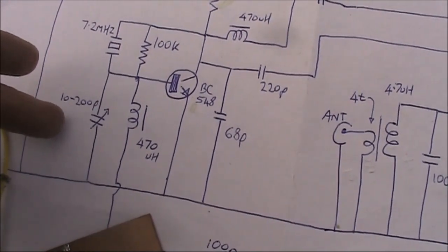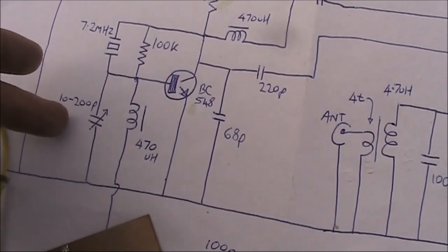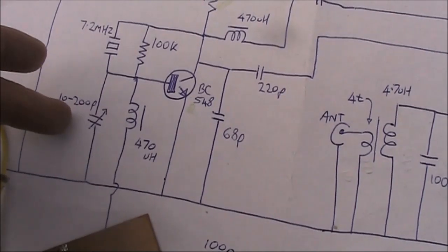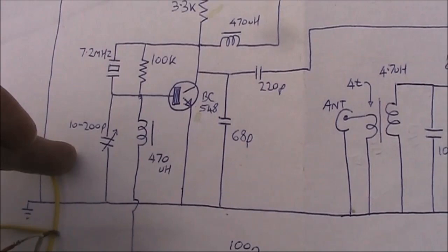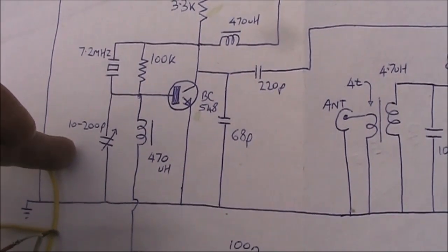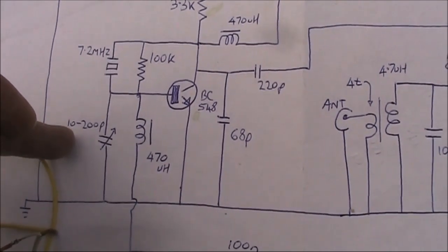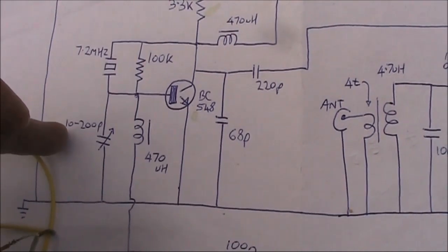The variable capacitor here allows you to vary the frequency to cover a section of the 7MHz band. This local oscillator is just a very simple, straightforward one-transistor circuit using a general-purpose NPN transistor.